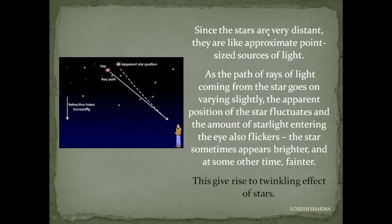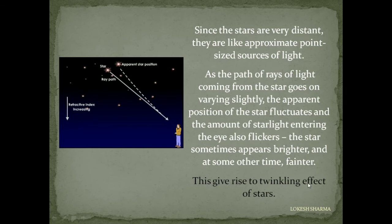Since the stars are very distant, they are like approximate point-sized sources of light. As the path of rays of light coming from the star keeps varying slightly, the apparent position of the star fluctuates and the amount of starlight entering the eye also flickers. The stars sometimes appear brighter and sometimes fainter, and this gives rise to the twinkling effect of the stars.